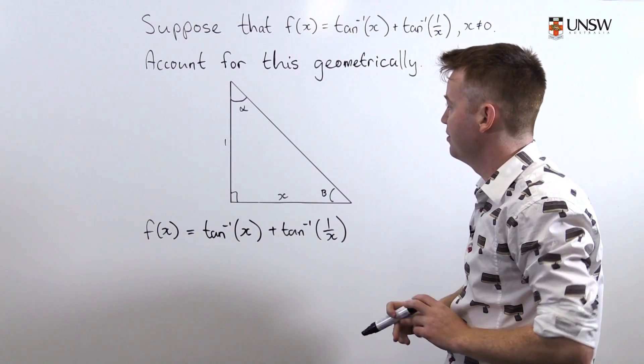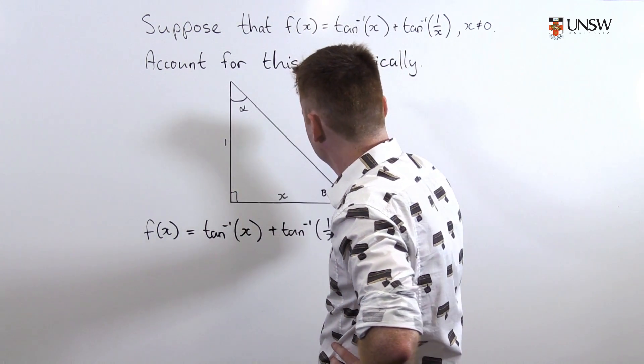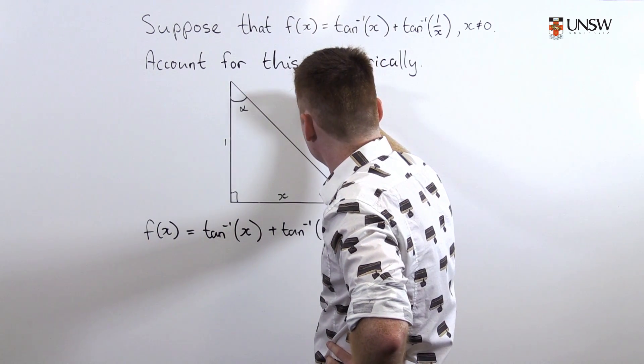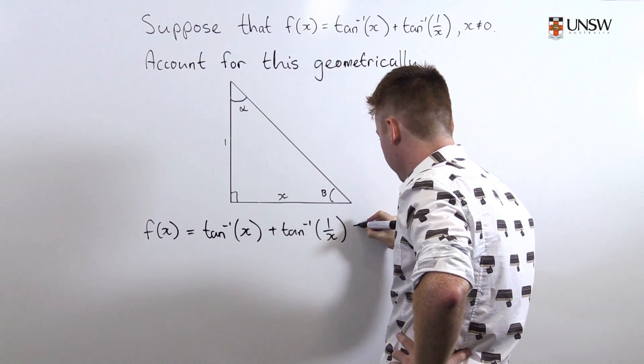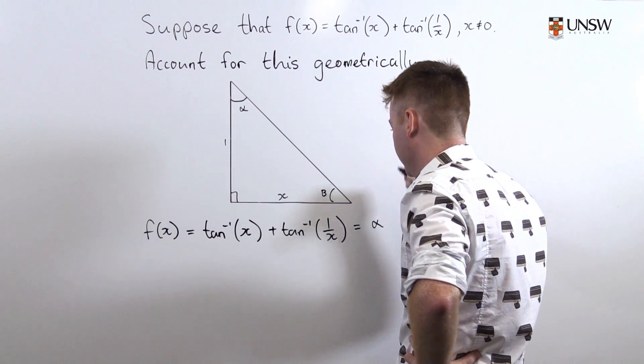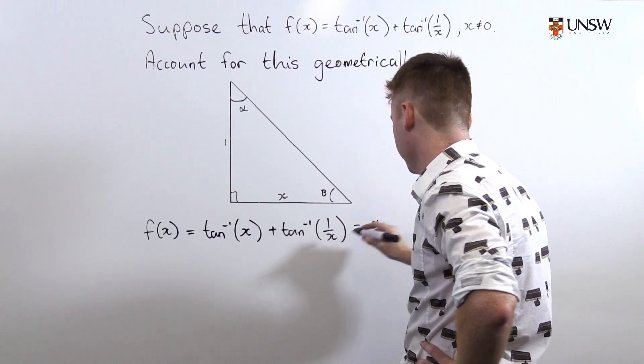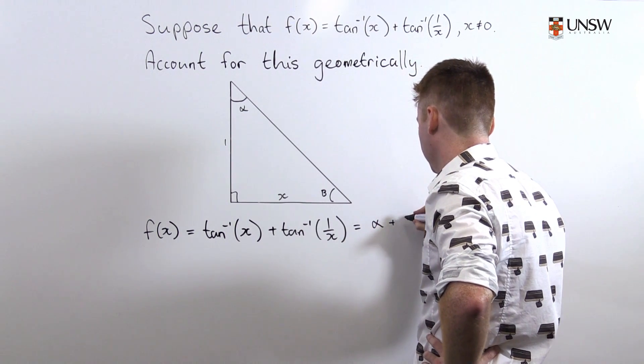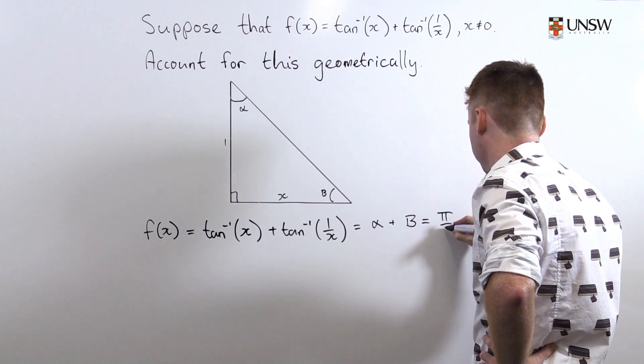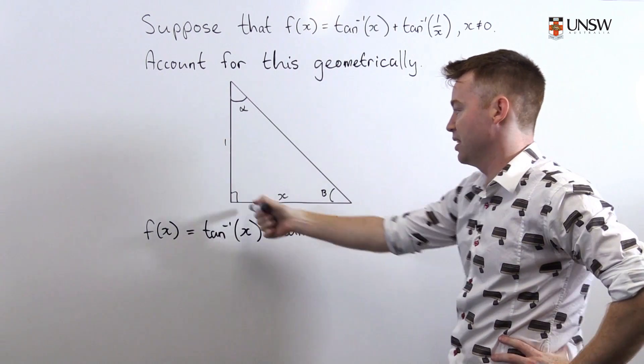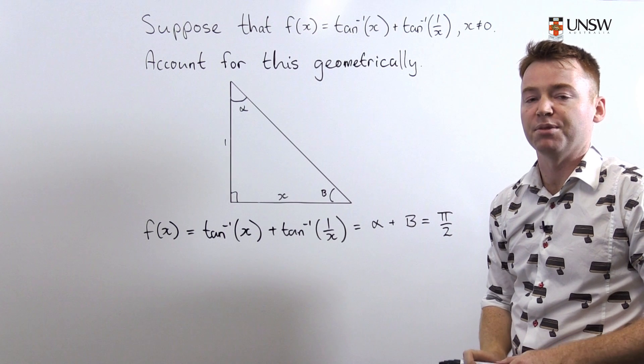Then f(x) being equal to tan⁻¹(x) plus tan⁻¹(1/x). Well, tan⁻¹(x) that's equal to tan of opposite over adjacent. So, that's opposite over adjacent there. So, tan⁻¹(x) is equal to α and tan⁻¹(1/x) is equal to β which by angle sum of a triangle must be equal to π/2. Since we have π/2 over here, these two angles must also sum to π/2.